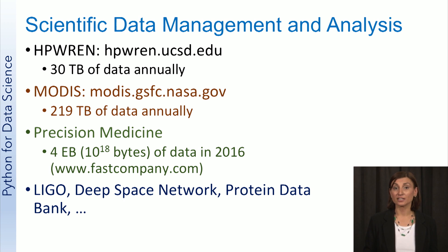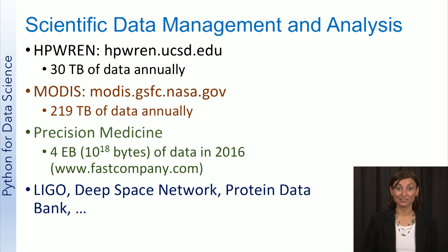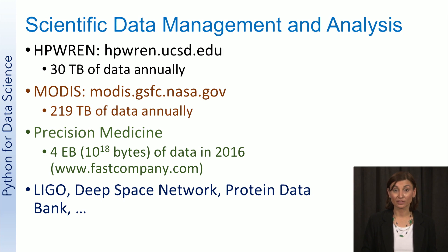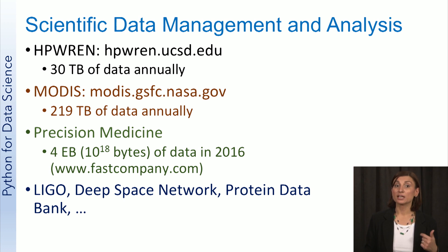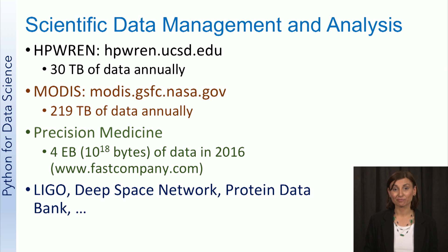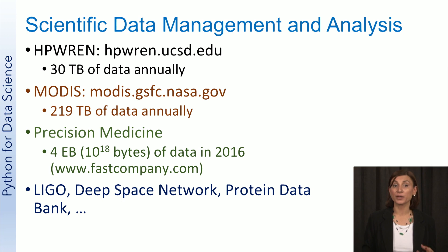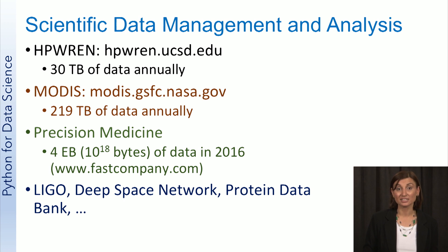LIGO, the Laser Interferometer Gravitational Wave Observatory, is the data source that led to the gravitational wave discovery in 2016. The experiment provides large-scale physics and observatory to detect cosmic gravitational waves. The Deep Space Network is NASA's network of large antennas and communication sites located in several countries, used to support space missions and research asteroids and planets; it updates its data stores with real-time data every five seconds. The Protein Data Bank is a repository of information about 3D structures of large biological molecules, which is important for research on human health, disease, and drug development.